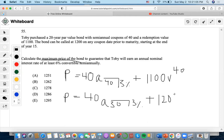Now we're going to have to solve both of these scenarios to find the maximum price of the bond to guarantee that Toby will earn it.